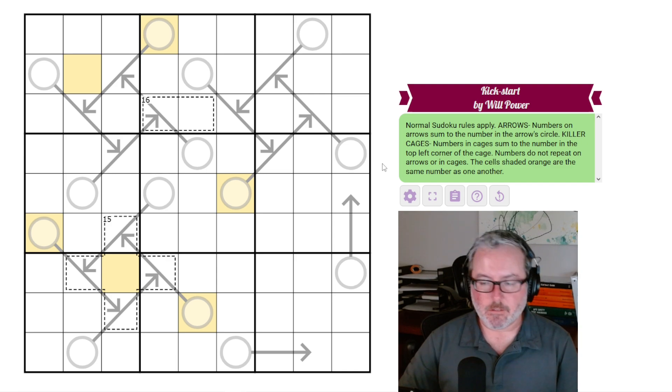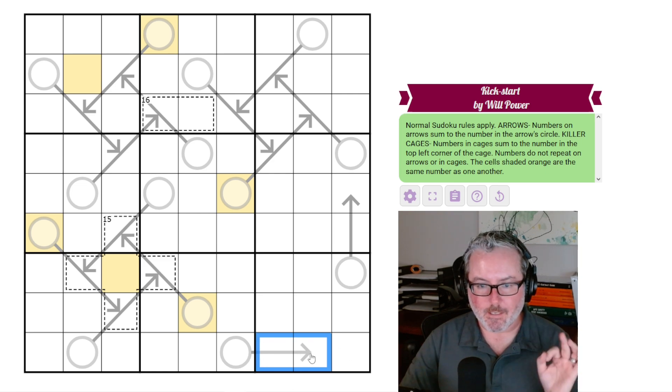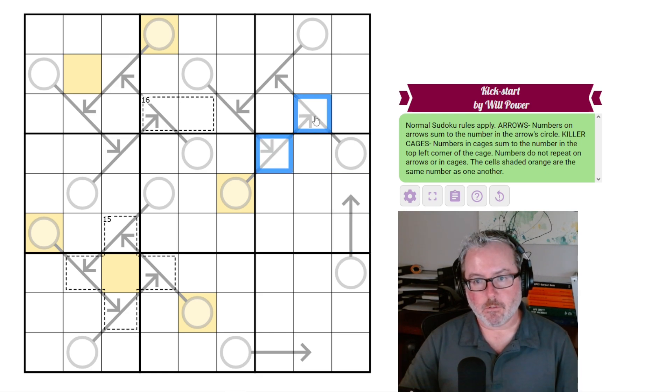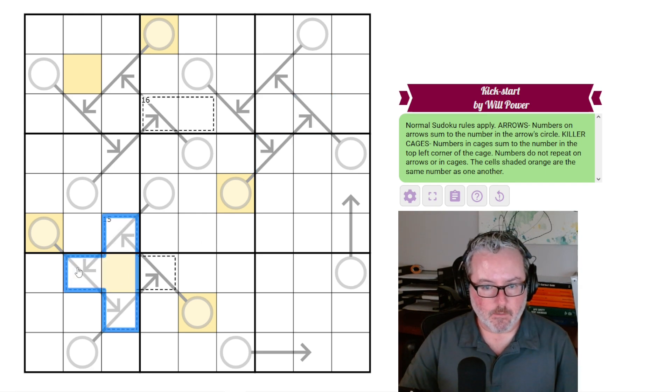Then we've got cages, numbers in cages sum to the number in the top left corner of the cage. Numbers do not repeat on arrows or in cages. That I didn't see until now. So the does not repeat is actually enforced on arrows, even if other rules would allow it in other puzzles. This one does not.